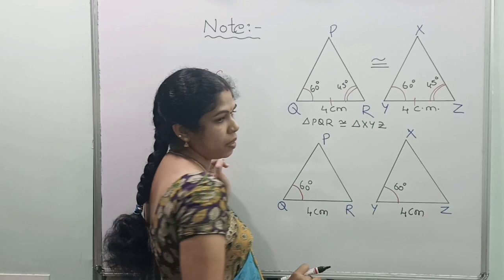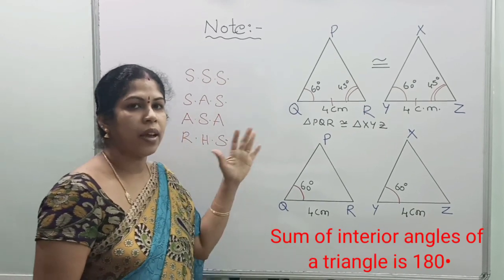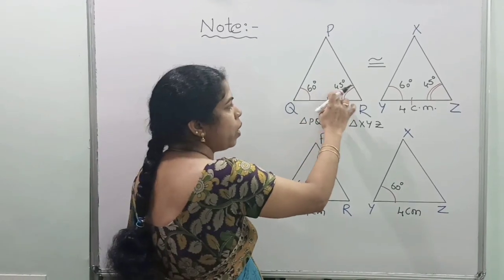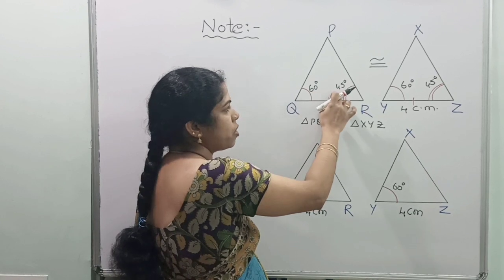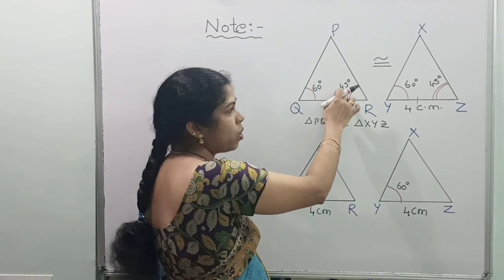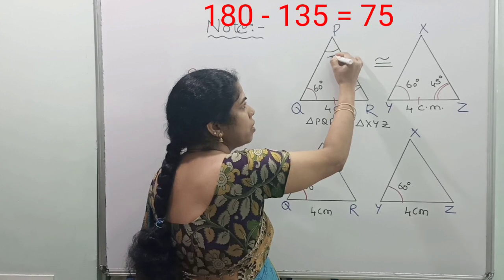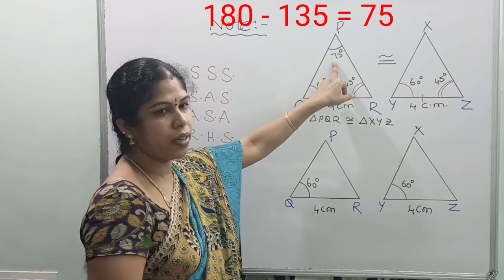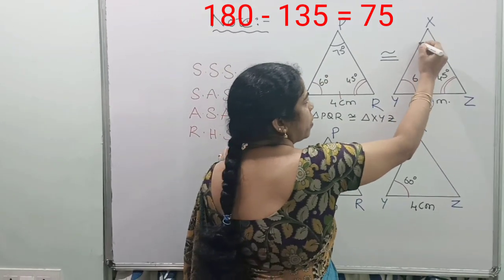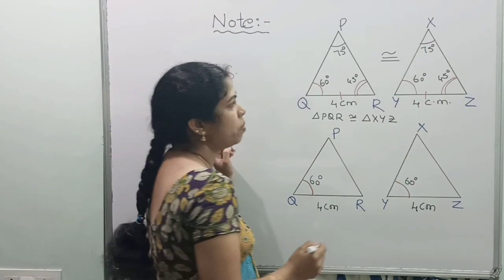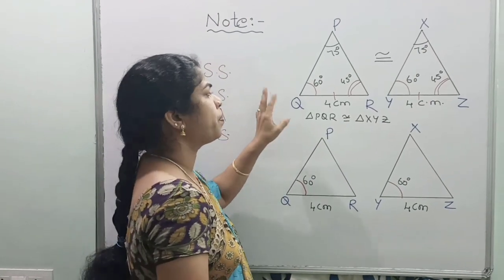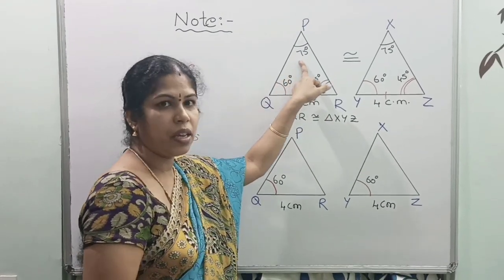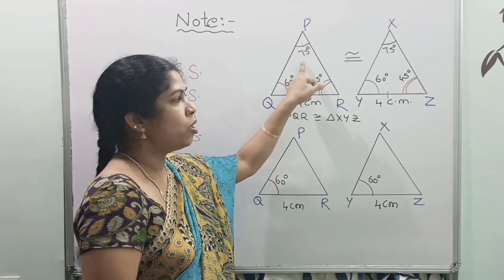What is the angle sum property of a triangle? The sum of three interior angles of a triangle is 180 degrees. So if two angles are 60 and 45, which is 105 degrees, the third angle is 180 minus 105, which is 75 degrees. If two angles are equal in a triangle, definitely the third angle is also going to be equal as per the angle sum property.